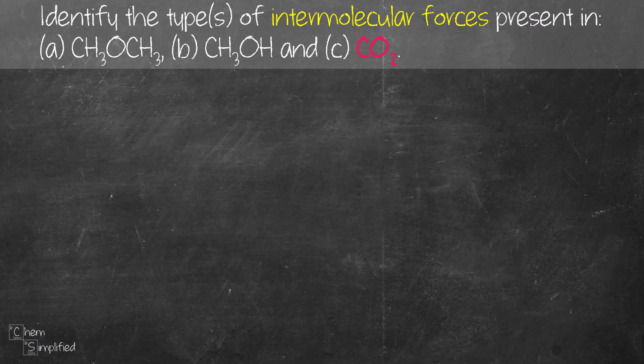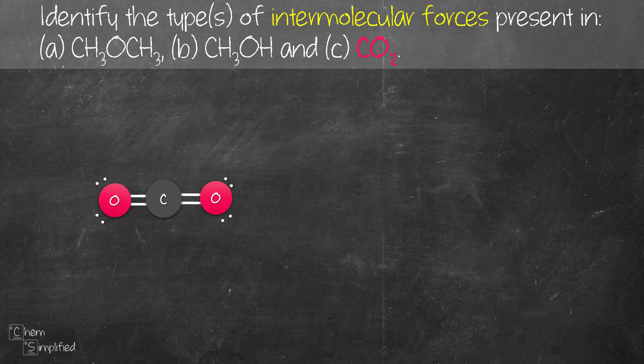Now we move on to the final molecule, carbon dioxide. It's a linear molecule. We have oxygen, which is electronegative, on both ends of the molecule. However, there's no hydrogen attached to that oxygen, so there's no hydrogen bonding present. Since oxygen is more electronegative than carbon, we have a dipole pointing towards each oxygen. Since we have two equal dipoles pointing away from each other, they cancel out, meaning there is no permanent dipole in this molecule.